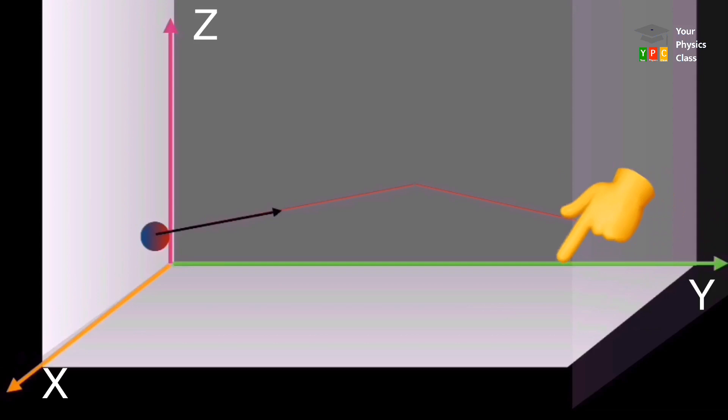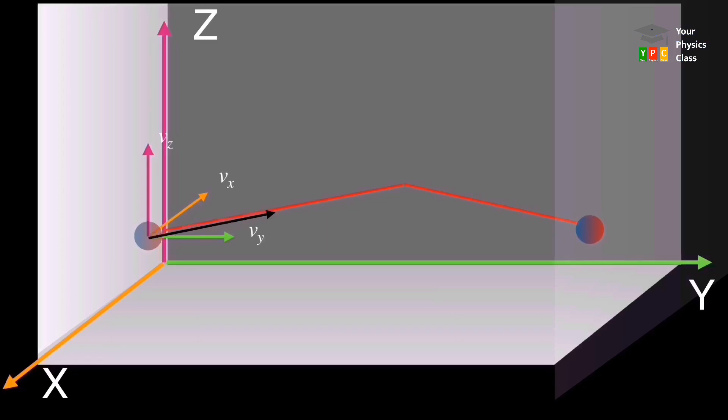Shaded wall, yeh YZ plane ko parallel hai. Molecule ke velocity component vectors VX, VY aur VZ hai. Molecule, shaded wall ko hit karte hi rebound hoga. To aap dekh rahe, sirf X component of velocity vector reverse hua aur Y aur Z component unchanged rahe.